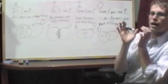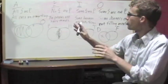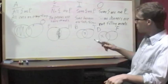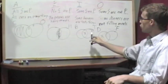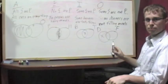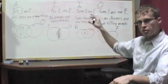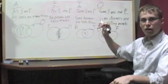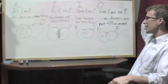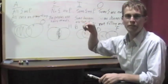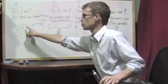So I want you to keep in mind that universal claims use shading. Partial claims use X's. And you always want to start out in your subject circle when you're figuring out what to do.